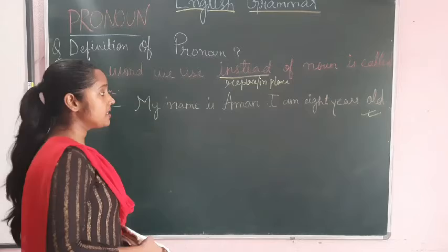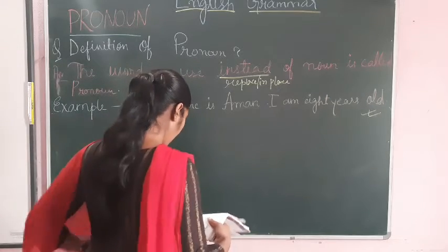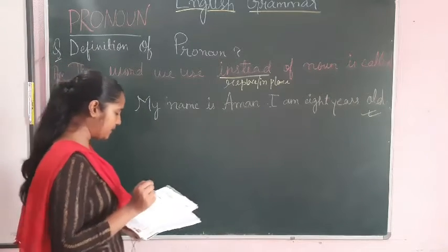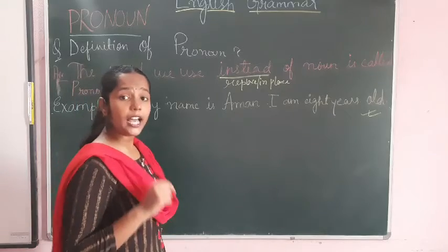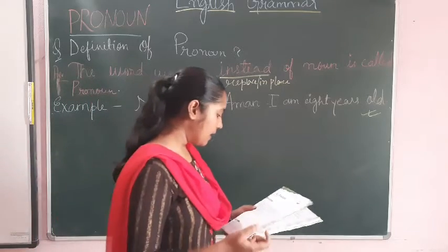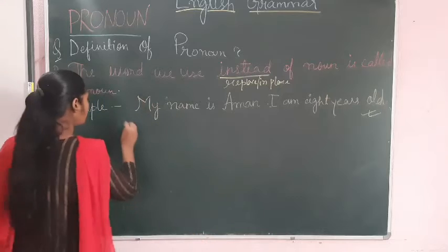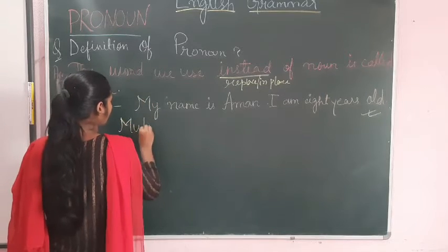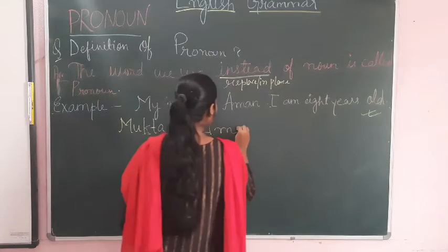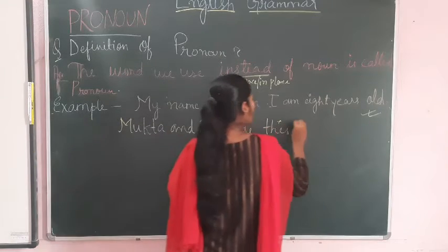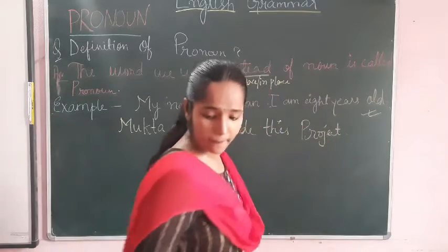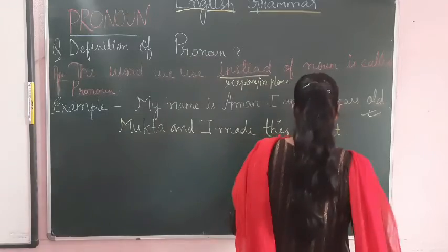As I have written here: 'My name is Aman, I am 8 years old.' The second example is: 'My name is Tannu.' The third example is: 'Mukta and I made the project' — it means there are two persons, Mukta and another. So the next sentence is: 'We enjoyed working together.'